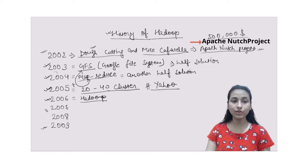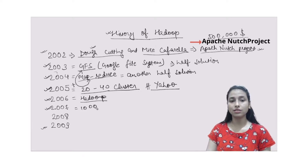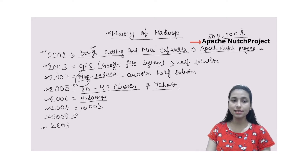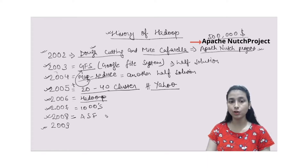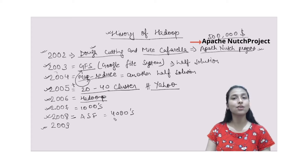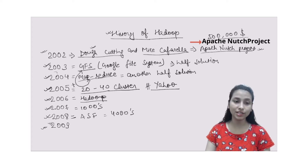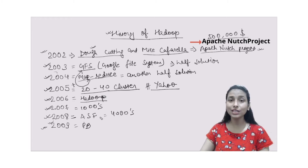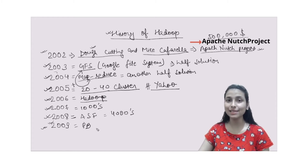Moving to the year 2007, Hadoop got tested on thousands of clusters and they started using it as open source. In 2008, Yahoo presented Hadoop to the Apache Software Foundation, which tested Hadoop on a 4,000-node cluster. Finally in 2009, it was tested to sort a petabyte of data in less than 17 hours, which could handle billions of searches and index millions of web pages.